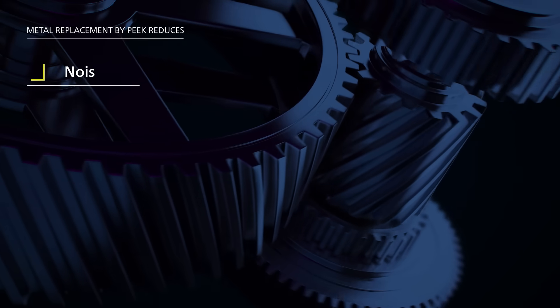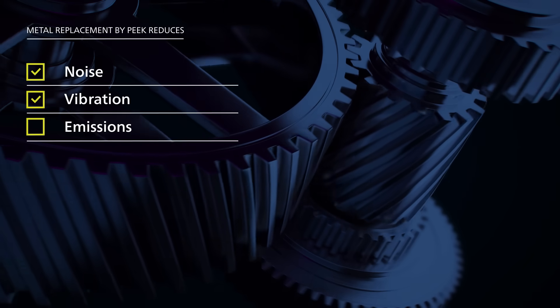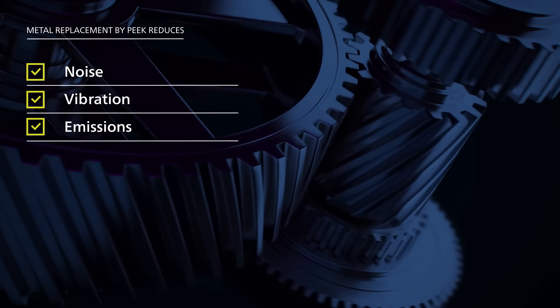To start, PEEK is lighter than metal and has a lower coefficient of friction, which reduces noise, vibrations and emissions, all of which improves energy efficiency of the vehicle.